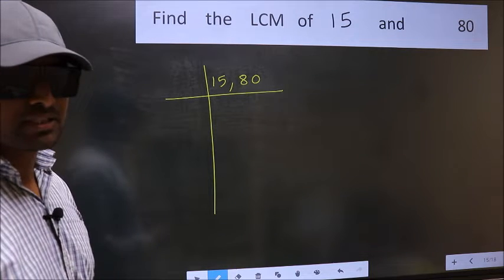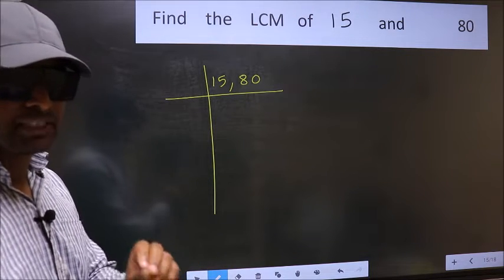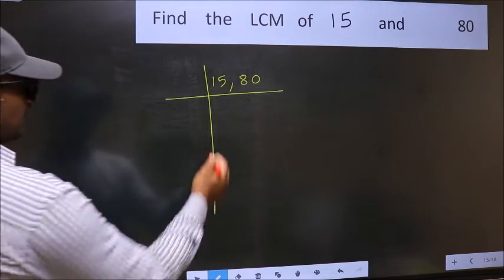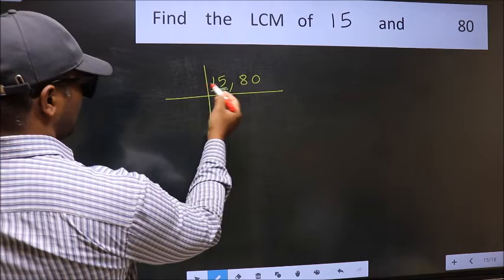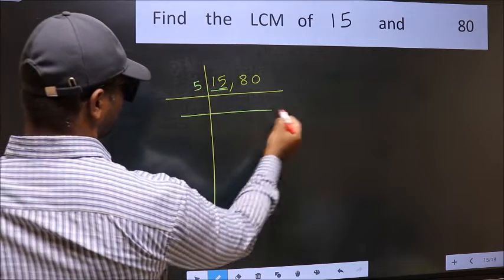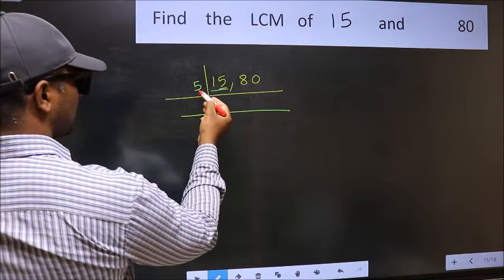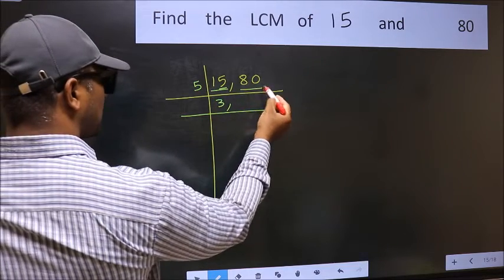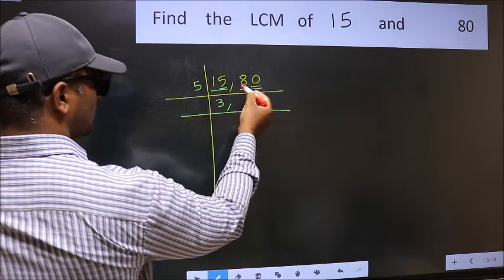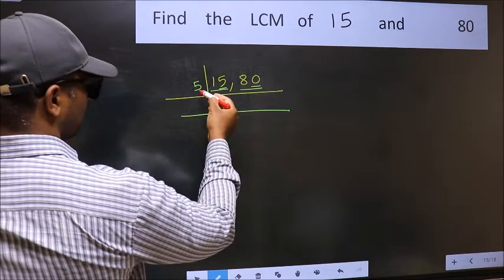Now you should focus on the first number which is 15. In this number the last digit is 5, so take 5. When do we get 15 in the 5 table? 5 times 3 is 15. The other number 80, last digit 0, so this number is divisible by 5.